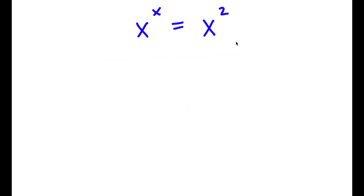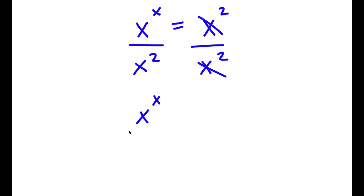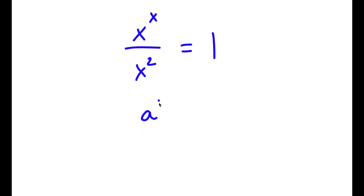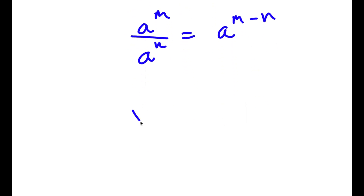Alright, so now I have x to the power of x is equal to x to the power of 2. The first thing I'm going to do is divide both sides by x to the power of 2. These cancel out and I'm left with x to the power of x over x to the power of 2 equals 1. Now using the rule that a to the power of m over a to the power of n equals a to the power of m minus n, I get x to the power of x minus 2, which equals 1.